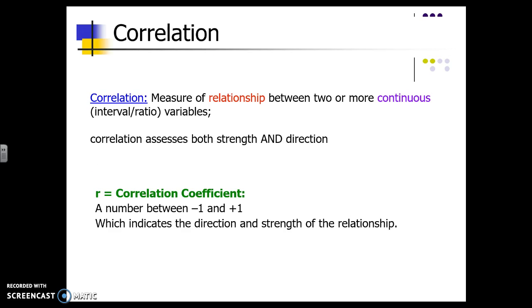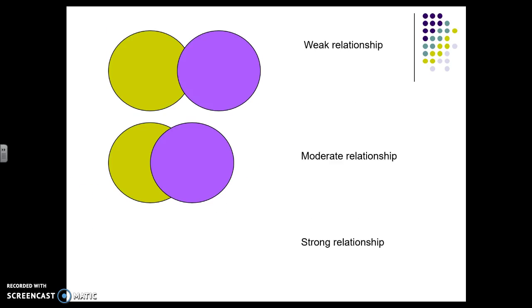So a correlation is a measure of the relationship between two or potentially more continuous variables. It can assess strength and direction. So r is your correlation coefficient. It's going to be between one and negative one. A weak relationship is shown right here because there's not a lot of overlap between the two circles. A moderate relationship has more overlap. In a strong relationship, we have a lot of overlap between the two circles.